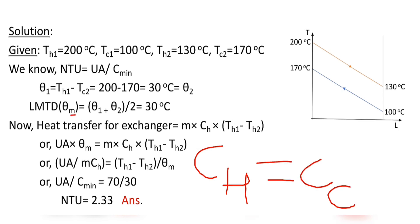The value of LMTD, θM, is equal to (ΔT1 plus ΔT2) divided by 2, which equals 30 degree Celsius.